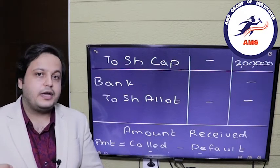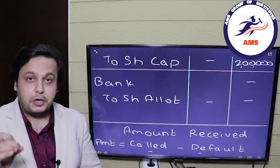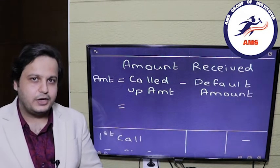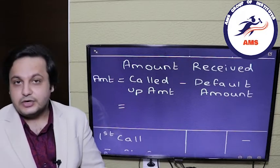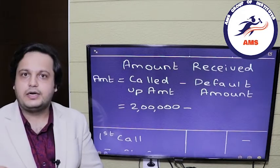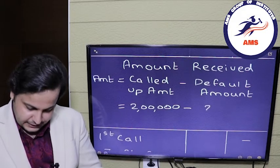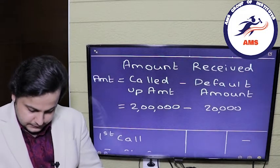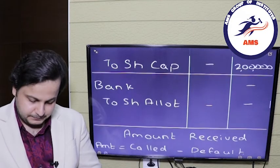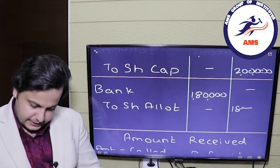Since there is a default and we are not using the Call in Arrears account, we will only pass the journal entry for receipt of the balance amount. The amount received equals the called-up amount minus the default. The called-up amount was 2 lakh rupees. The default is 10,000 shares multiplied by rupees 2, which is 20,000 rupees. So we receive only 1 lakh 80,000 rupees. Bank account is debited by 1 lakh 80,000 and share allotment credited by 1 lakh 80,000 rupees.